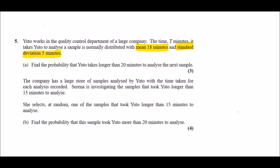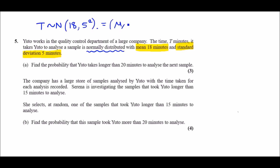Okay guys, number five. Uto works in a quality control department of a large company. The time T minutes it takes Uto to analyze a sample is normally distributed with mean 18 and standard deviation 5. Before we answer any question, always write the distribution at the top: let T be normally distributed with mean 18 and standard deviation 5, represented as mu and sigma squared.